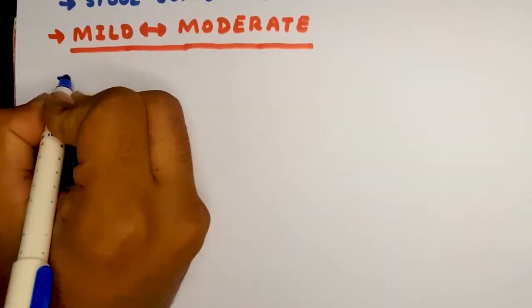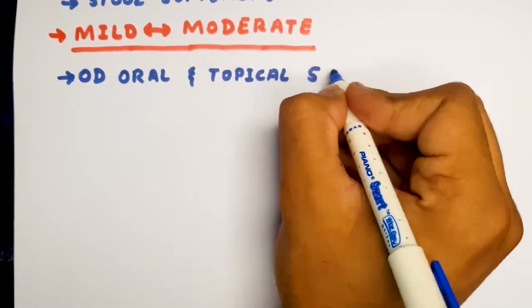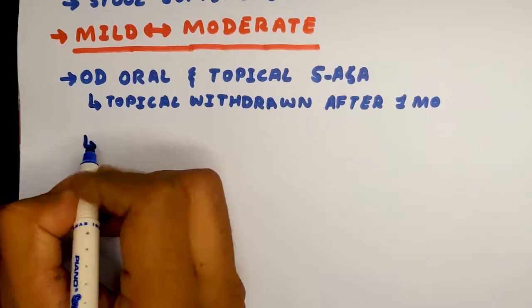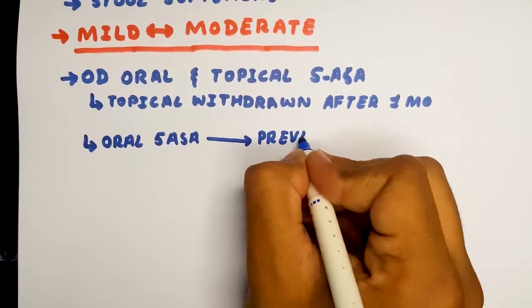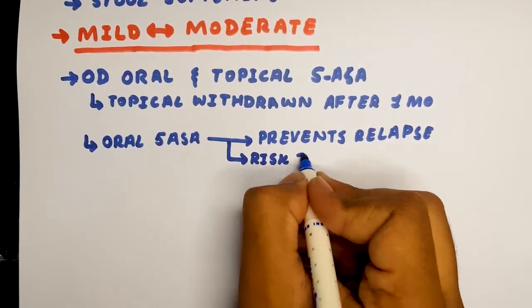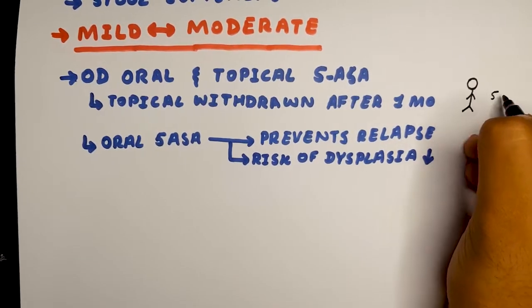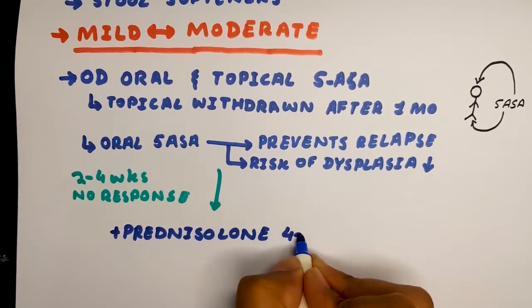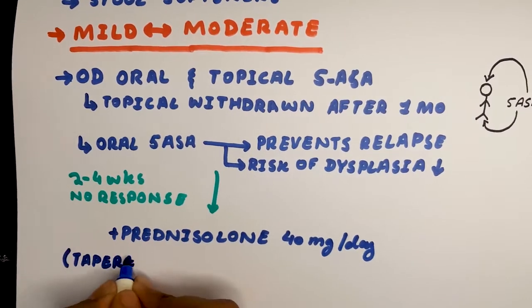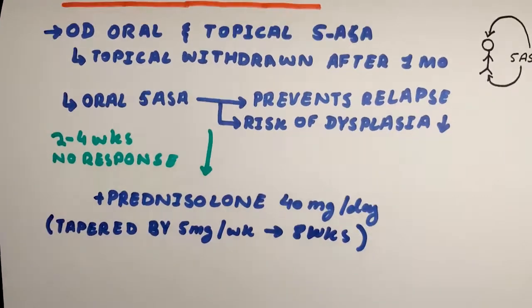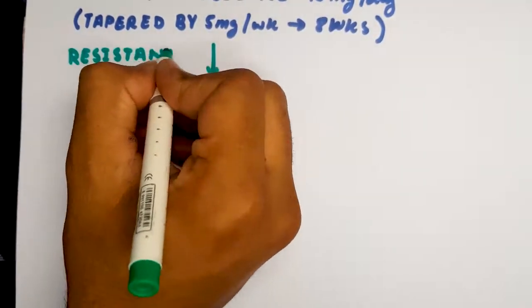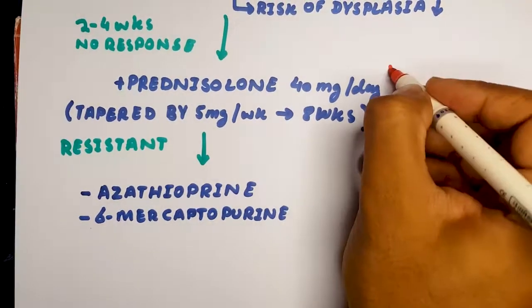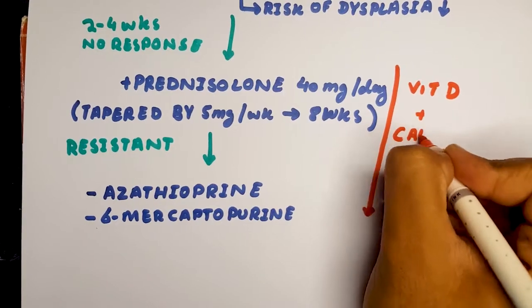In mild to moderate cases, we give a daily dose of oral and topical 5-ASA. The topical is withdrawn after one month, whereas the oral 5-ASA is necessary to prevent relapses and risk of dysplasia. This is known as the top and tail approach. If after 2-4 weeks there's no response, we start adding steroids which are tapered by 5 mg per week for 8 weeks. If the patient is resistant, we start immunosuppression. Along with all of this, we give calcium and vitamin D supplements to prevent bone resorption.